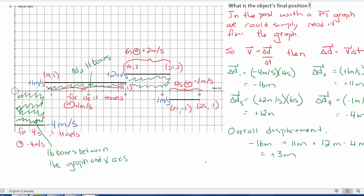So negative 16 plus 11 plus 12 minus 4 is plus 3 meters. So this object's final position is plus 3 meters from where it started. So 3 meters in the positive direction, whatever that is. Typically we say to the right. Okay, if a different set of coordinates were provided, you would just make sure that you went plus 3 meters. So if it started at 0, its final position would be plus 3 meters.